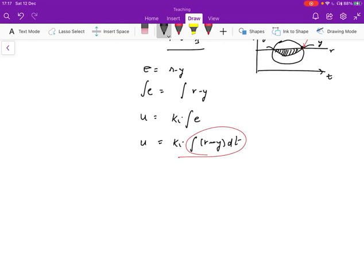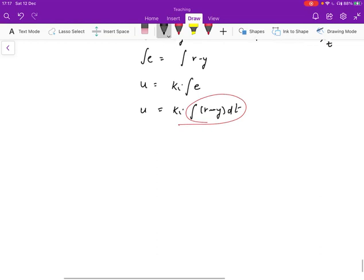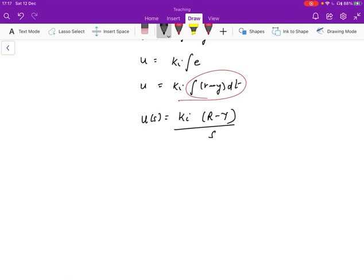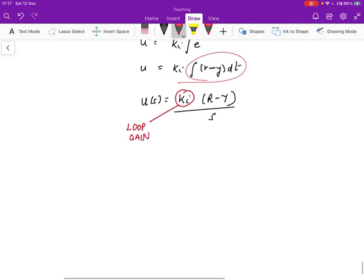So here is U given this way. And so if we take the Laplace transform U of S, it's going to be given as KI(R minus Y)/S because the integral translates to this one over S. And this is going to be the loop gain. So KI over here is a loop gain, which corresponds to the KP we saw before.